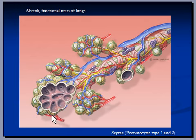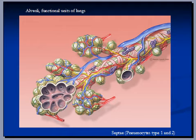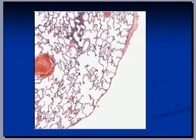This oxygenated blood is returned back to the heart with the help of these blood vessels known as pulmonary veins. These lines here are known as septae, which are made up of type 1 and type 2 pneumocytes. These alveolar septae are visible here, here, and here.